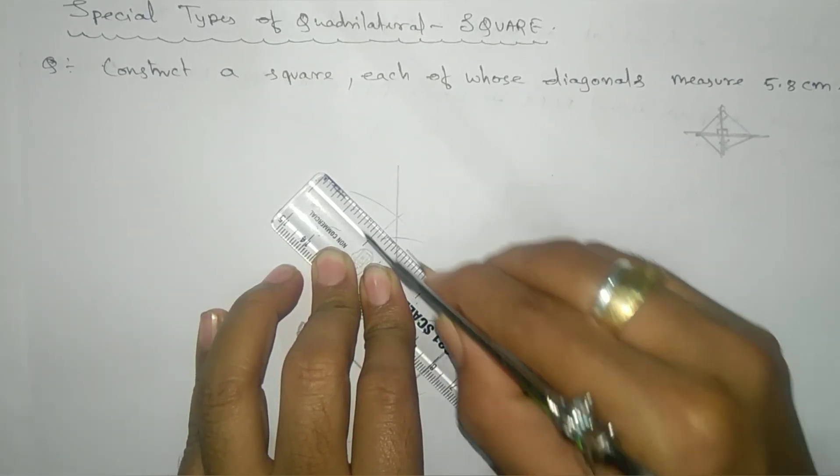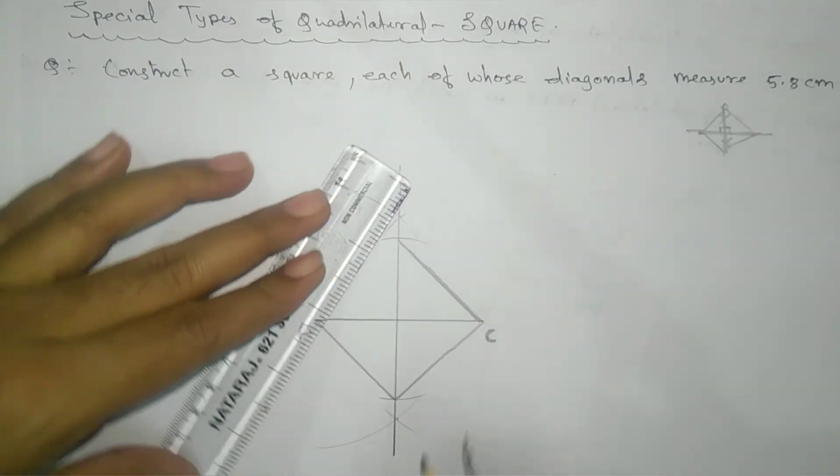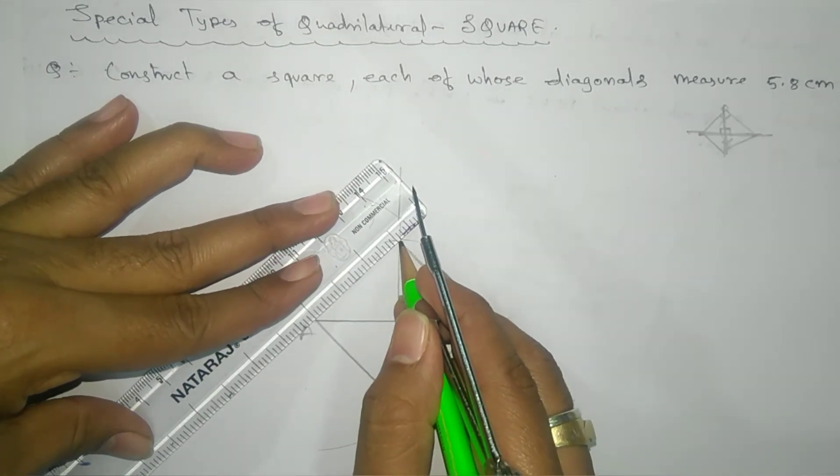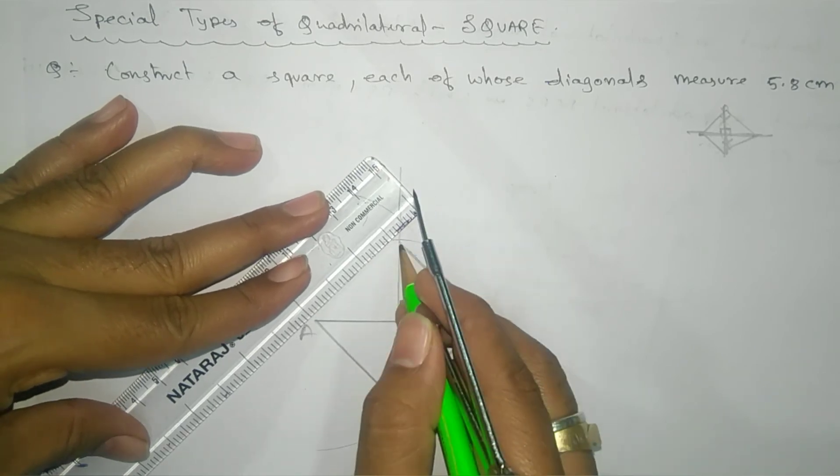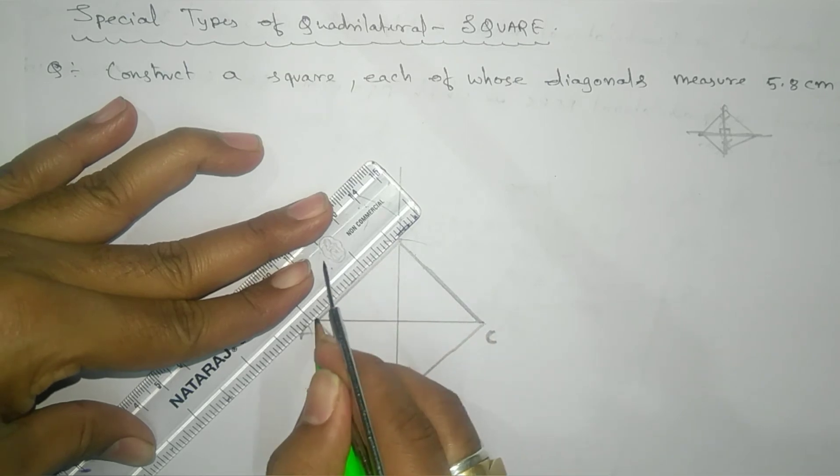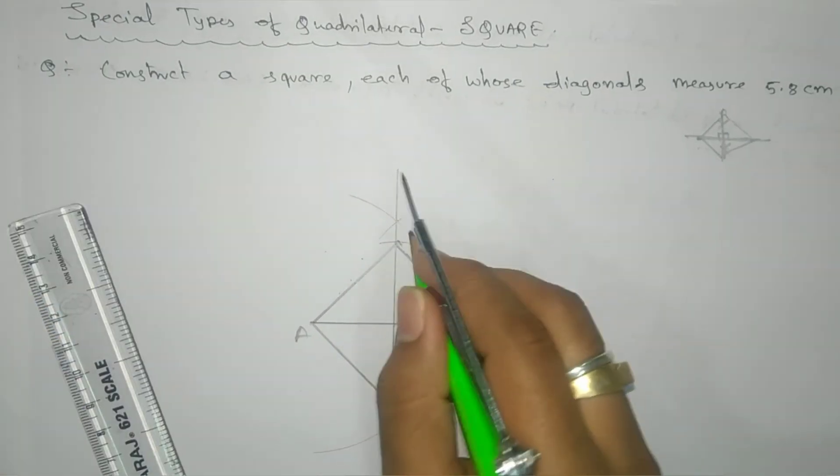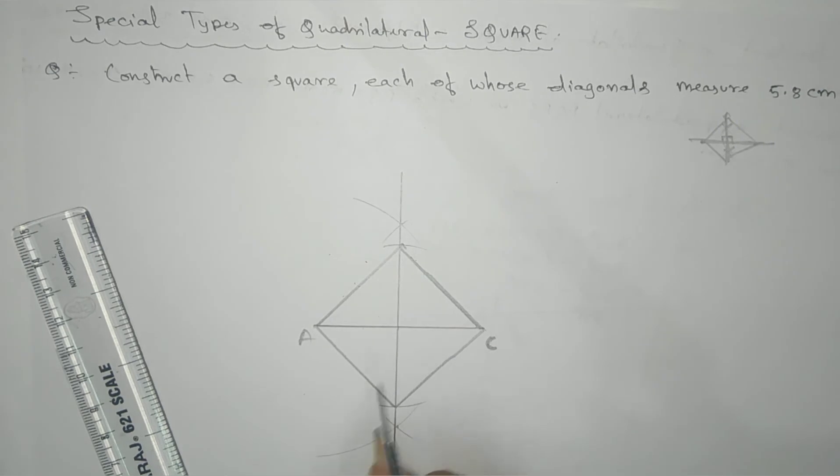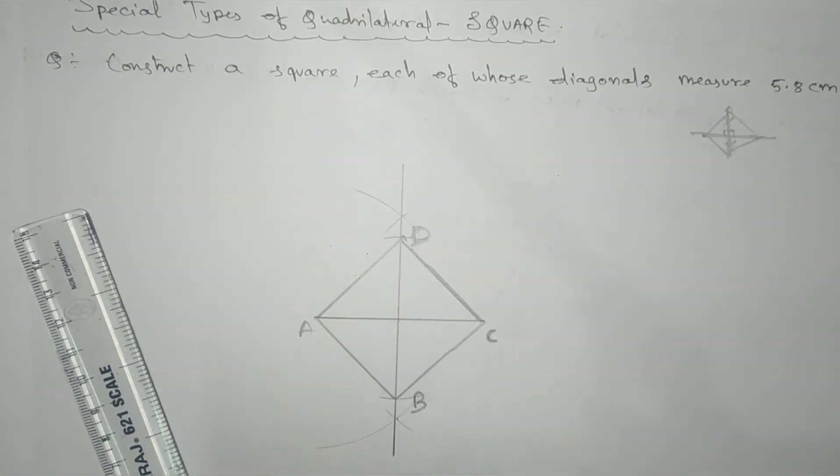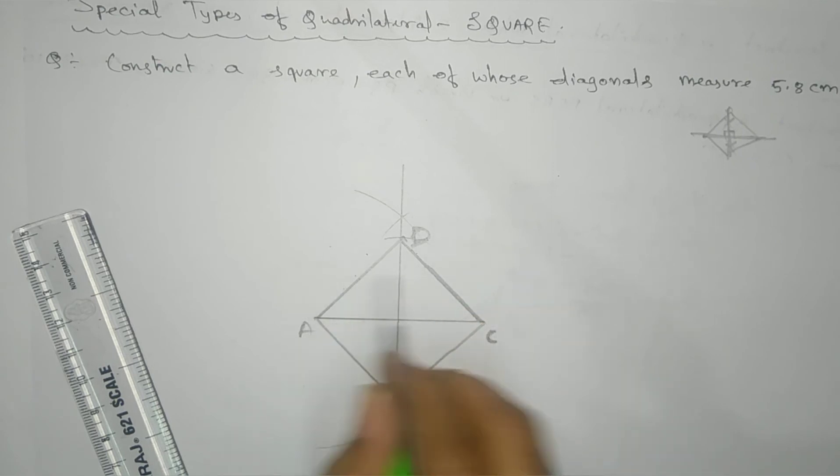Sorry, little bit - sorry, little mistake is there. Okay, no problem. So you can go for A, B, C like this, or you can go for A, B, C, D like this. This will be your diagonal length.